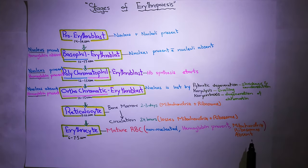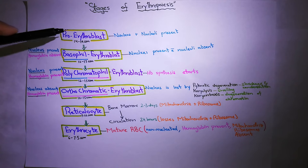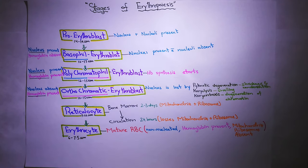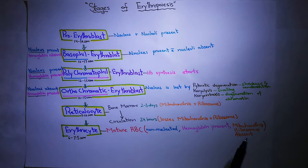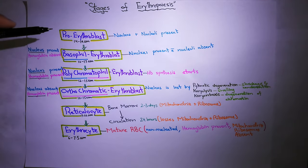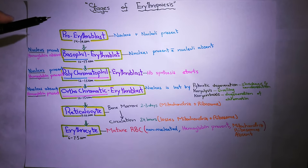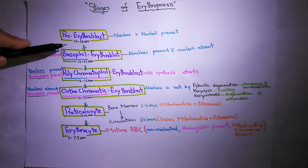The first stage is the pro-erythroblast. Erythroblast means an immature RBC. In pro-erythroblast, the nucleus is present, nucleoli are also present, and all organelles including mitochondria and ribosomes are present. However, hemoglobin is absent in pro-erythroblast. This is like any general cell — it has a nucleus, organelles, but no hemoglobin yet.